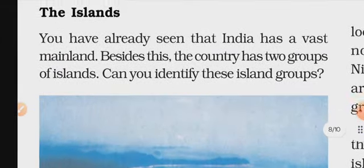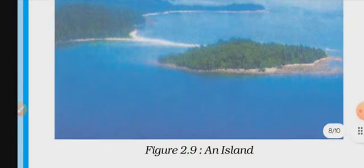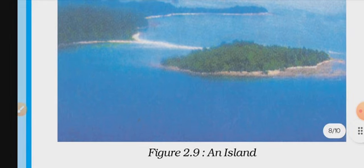Our last topic is islands. In India, when I talk about islands — what is an island? That particular landmass which is surrounded by water on all four sides. A landmass covered by water on all sides — we refer to this landmass as an island.